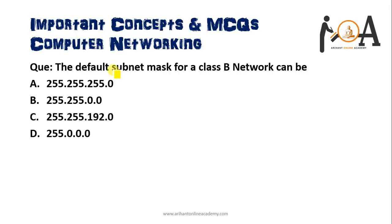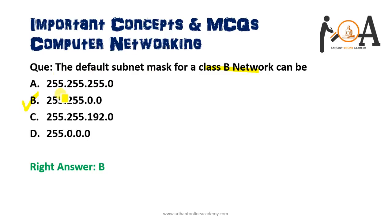The next question is: what is the default subnet mask for a Class B network? You can easily answer this by looking at the reference: in Class A, the default subnet mask is 255.0.0.0; in Class B it is 255.255.0.0; in Class C it is 255.255.255.0; and in Class D all octets are full. So option B — 255.255.0.0 — is the correct answer for the default subnet mask for a Class B network.